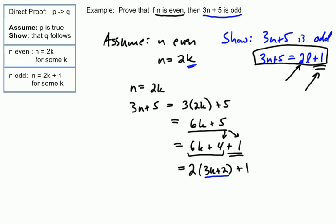We know that K is an integer. If you multiply an integer times 3 and add 2, you also have an integer. So we know that this is really 2 times some L plus 1, which is in fact the representation of an odd number.